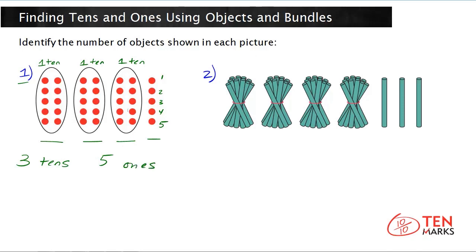Now to figure out which number this is, put these digits into a place value table. Since you have three tens, you put the digit three in the tens column. And you have five ones, so five goes in the ones column. And you have the number thirty-five. So three tens and five ones is the number thirty-five.